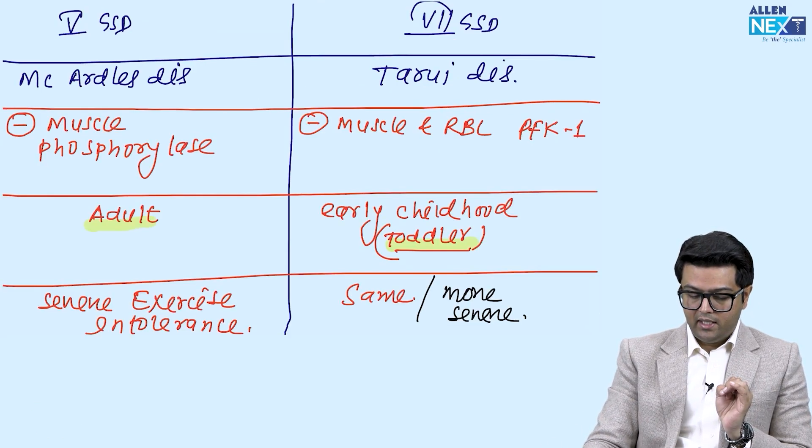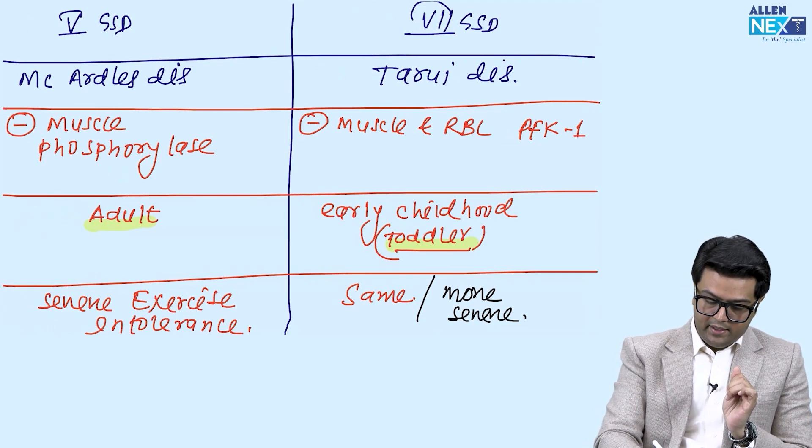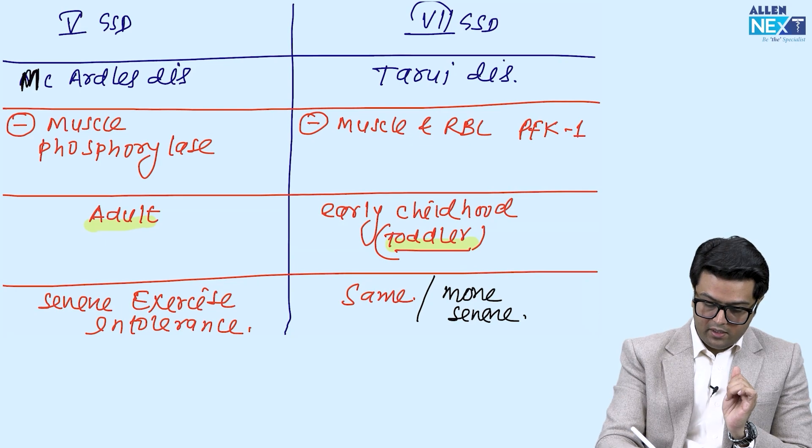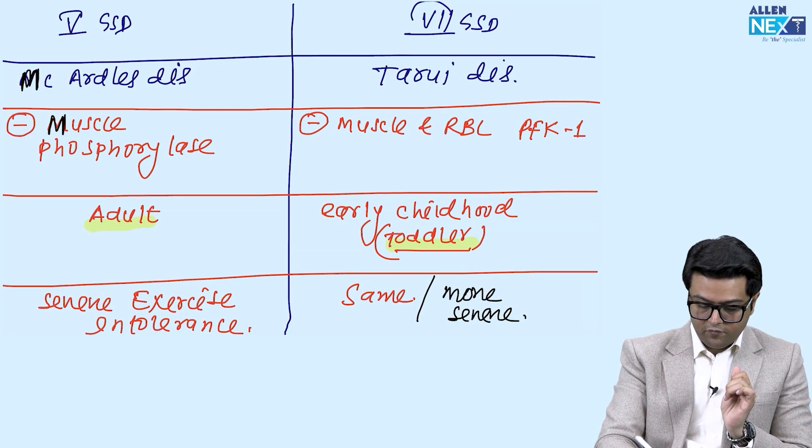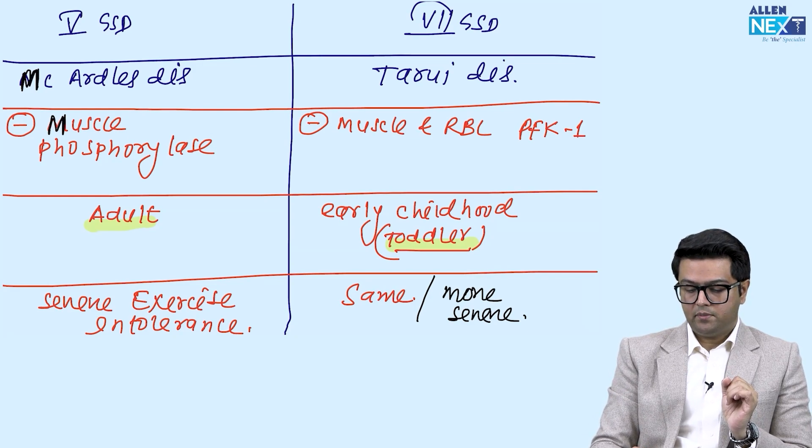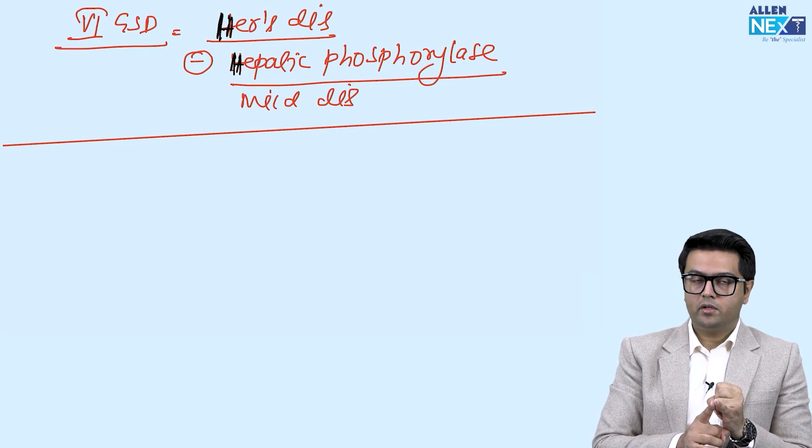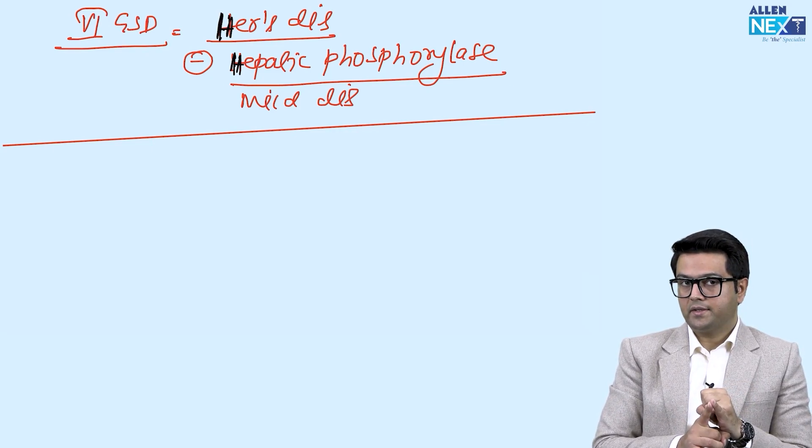And just to remember, H for Hers, H for hepatic phosphorylase. And similarly, M for McArdle's disease, M for McArdle's and M for muscle phosphorylase activity. I was just summarizing.